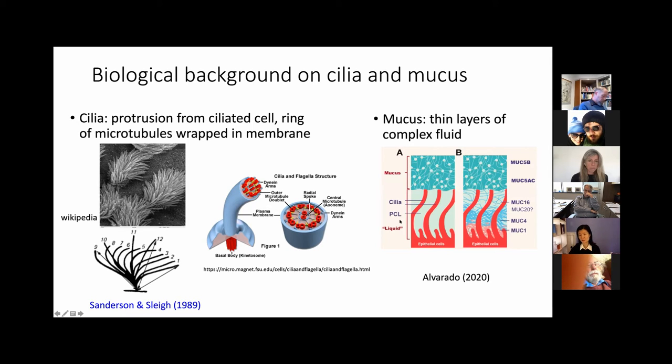The cilia have that tip stick into the mucus. They are submerged in the liquid. The classical picture is that mucus is floating on top of this liquid near the tip of the cilia. But the more modern picture is that the fluid is rather complex. We're going to treat this as a homogeneous fluid.